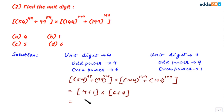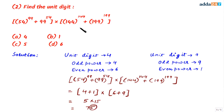So we evaluate: (4 + 1) × (6 + 9) = 5 × 15 = 75. The digit at the units place is 5, so the correct option is C.